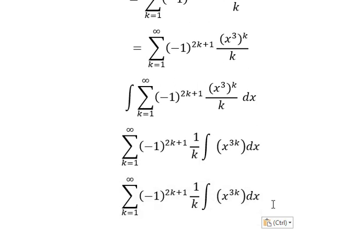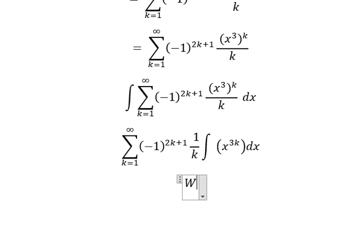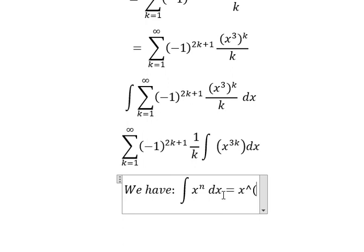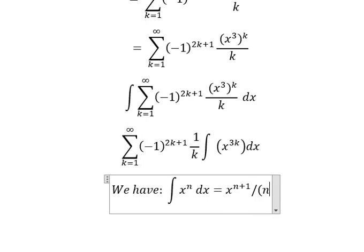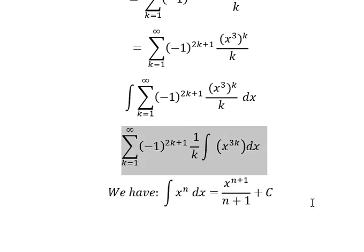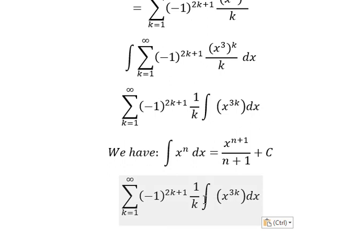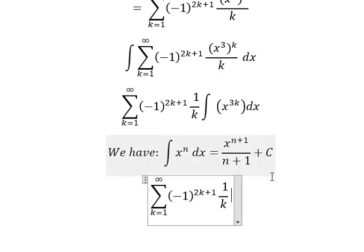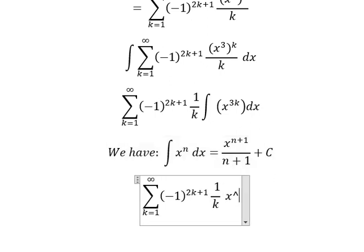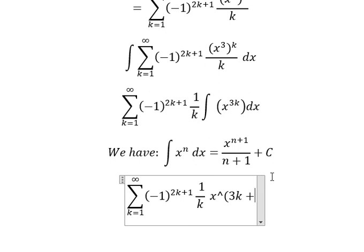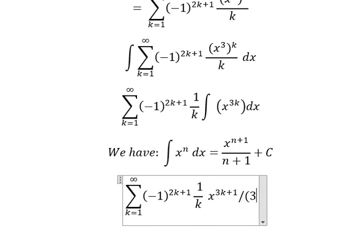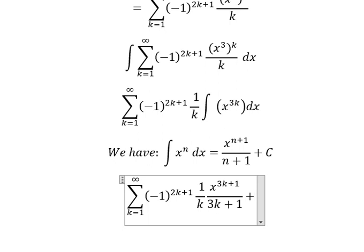So we have the formula. The integration of this one, we have x to the power of 3k plus one over 3k plus one, and then I will put plus C.